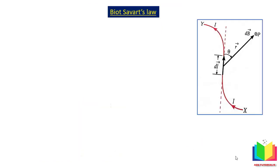Now we have to discuss Biot-Savart's law. Suppose a conductor XY carries current I, so this current I is responsible for the magnetic field — this is what Oersted observed. Now we have to calculate how much magnetic field will be produced at point P. Biot and Savart were scientists who gave an equation which gives us the relationship between the magnetic field and the current that produces it.